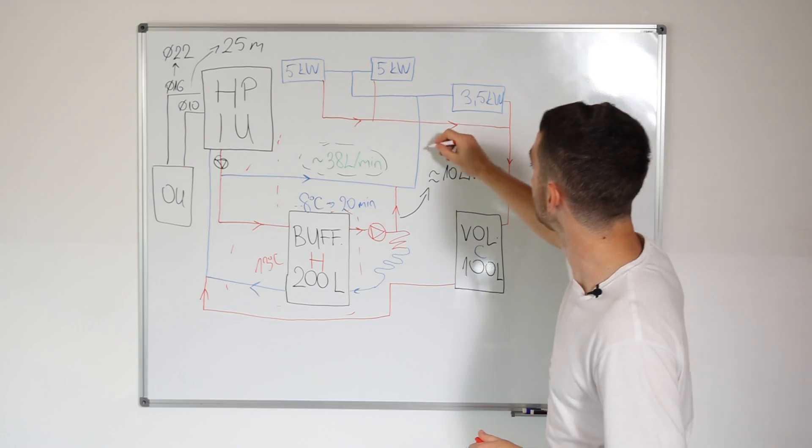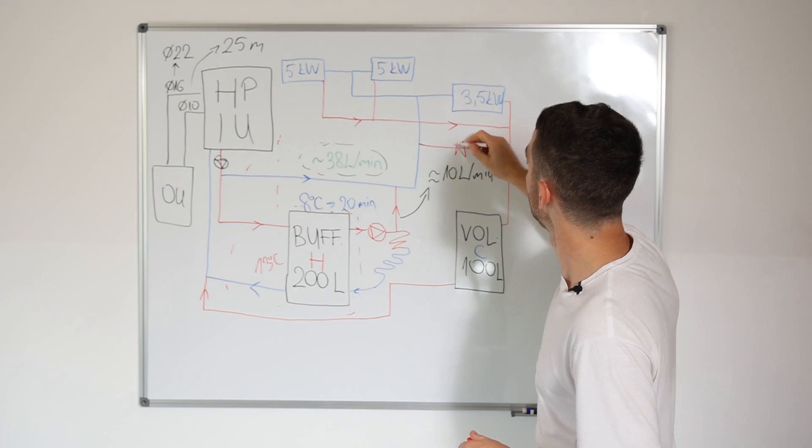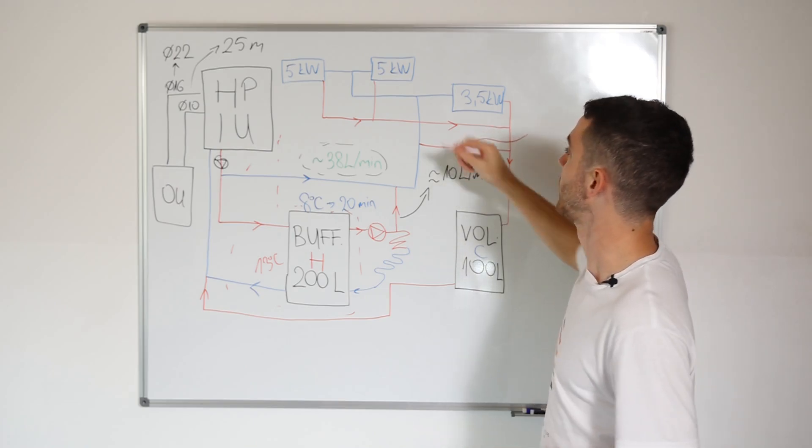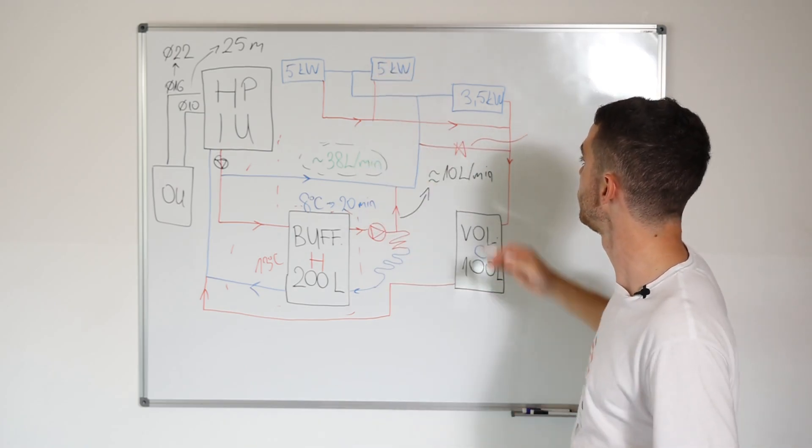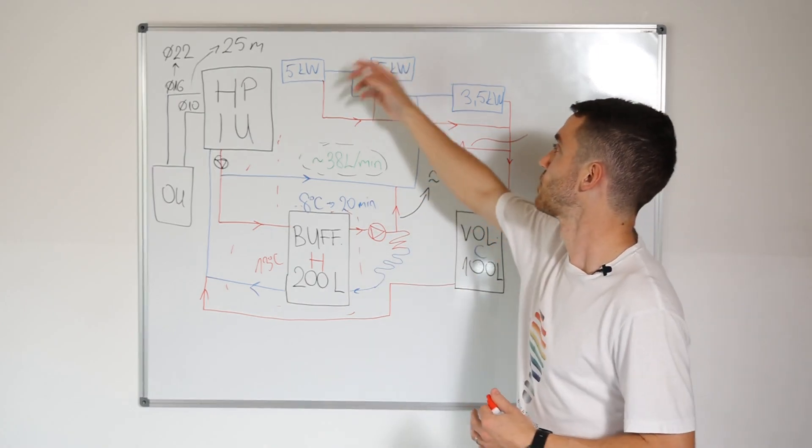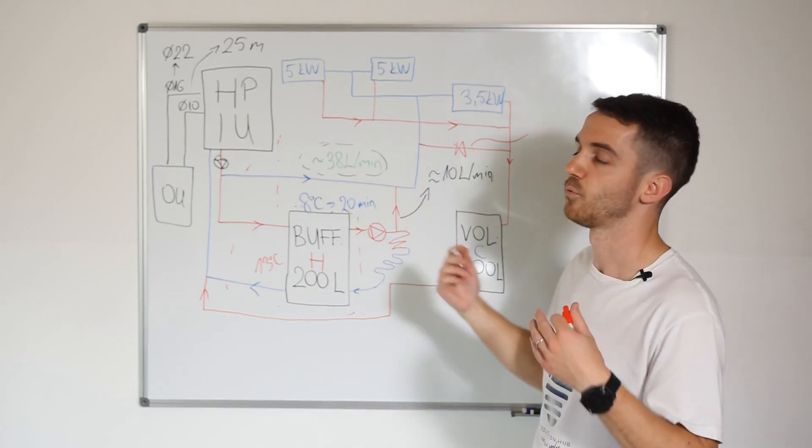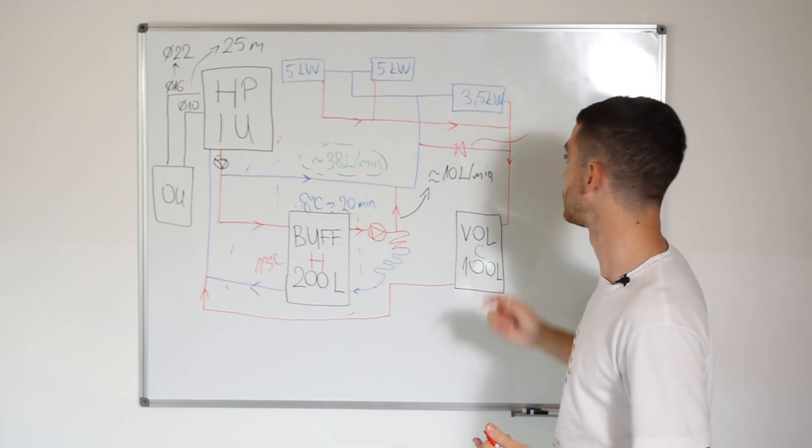So bypass valve, which will open if flow rate is not enough. In that case, they will not have the problem. Of course, fan coils will not work, but they will not have a problem for heat pump, for frozen heat exchanger and so on.